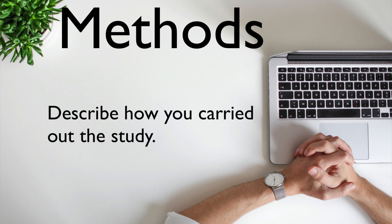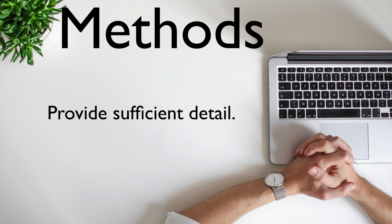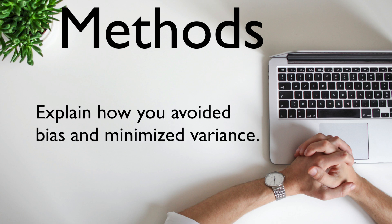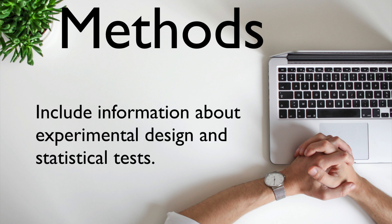Next is the methods section, where you describe exactly how you carried out the study. Describe the study area and the methods clearly and in sufficient detail so that someone else can repeat the study. Report any tests or procedures you undertook to avoid bias or minimize variance. Provide details for any unusual or new technique. Include information about experimental design, statistical models, and tests.